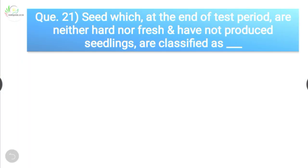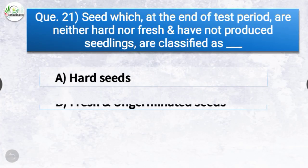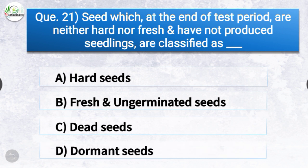Question number twenty-one: Seeds which at the end of the test period are neither hard nor fresh and have not produced seedlings are classified as — the options are hard seeds, fresh un-germinated seeds, dead seeds, or dormant seeds. The correct answer is option C — dead seeds.